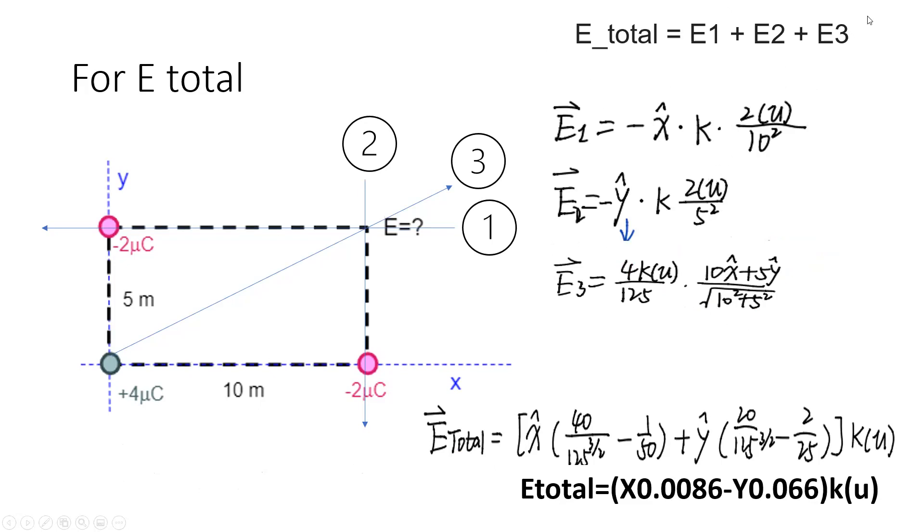The sum of the E fields: E total equals E1 plus E2 plus E3. We can see that E3 can be separated into the x and y directions. E1 is along the x direction and E2 is along the y direction. Therefore, to sum up all the E fields, we can sum the x components together and y components separately.